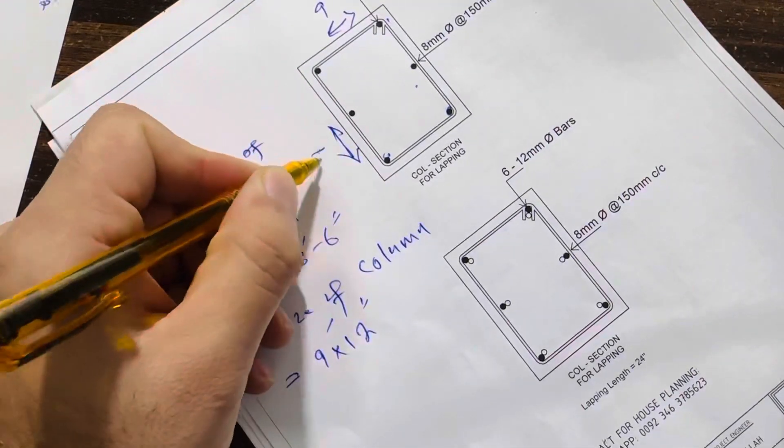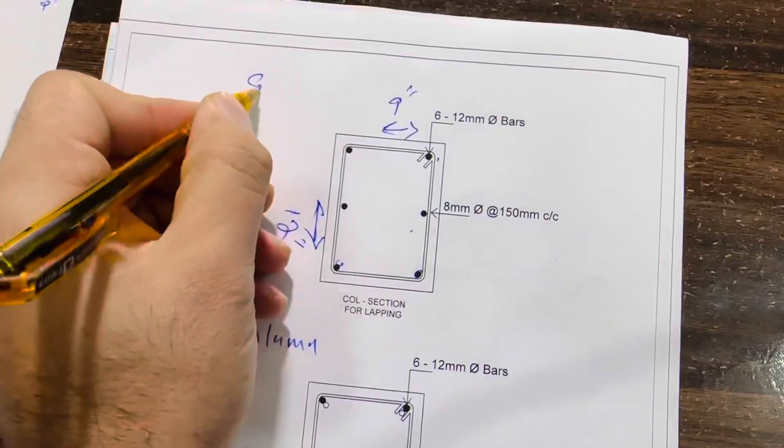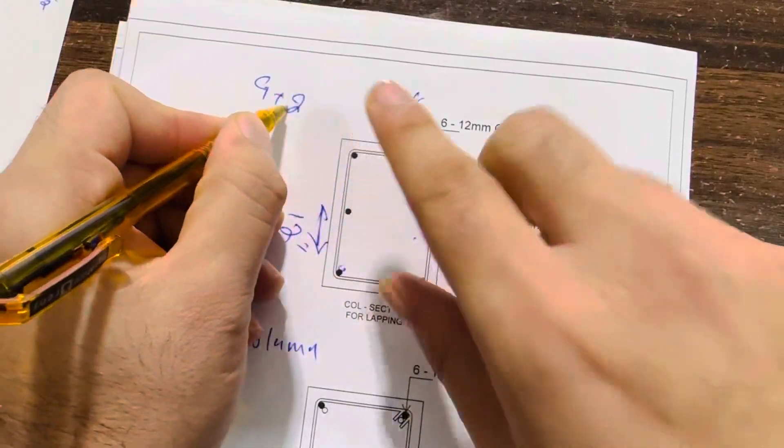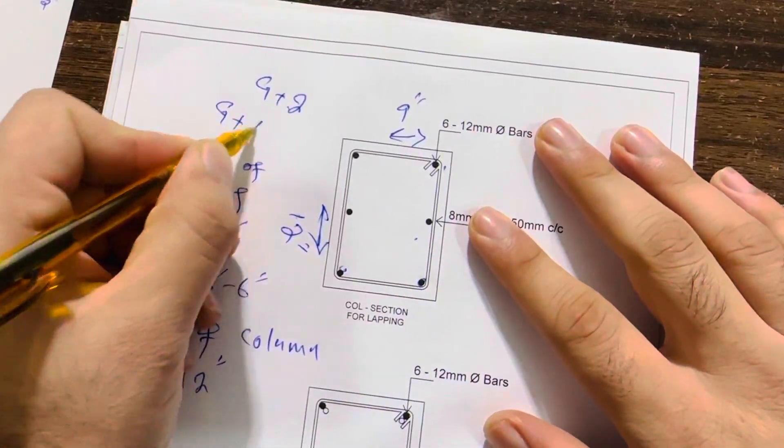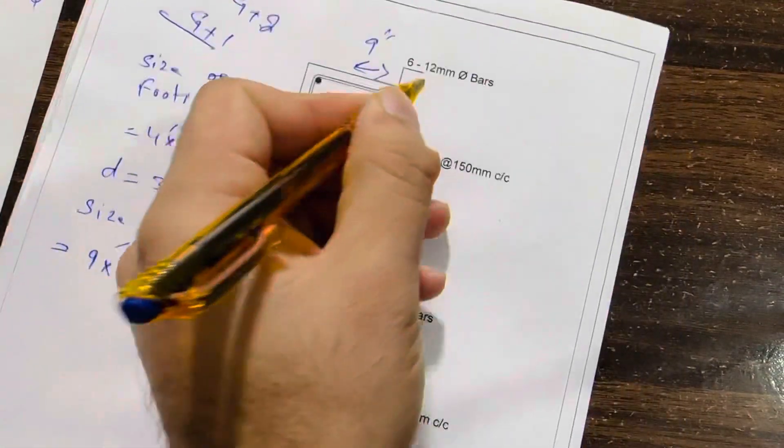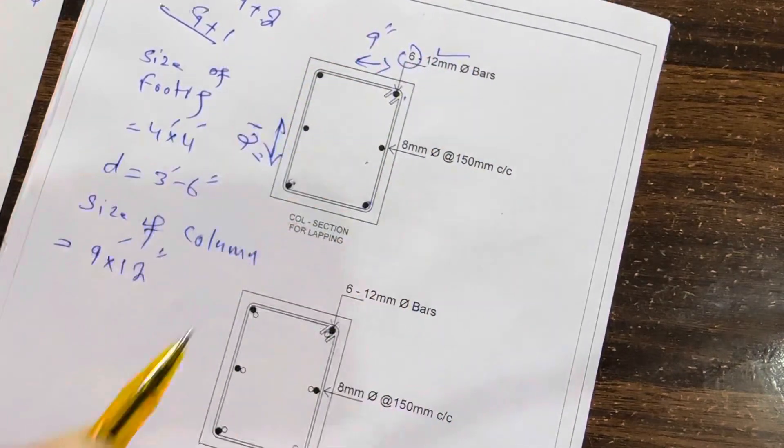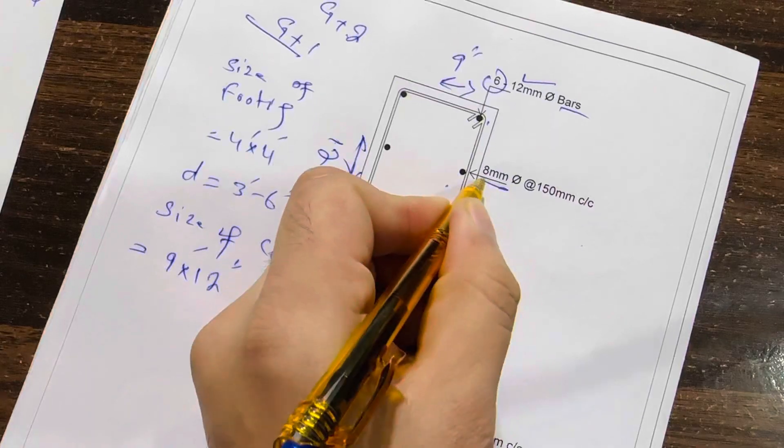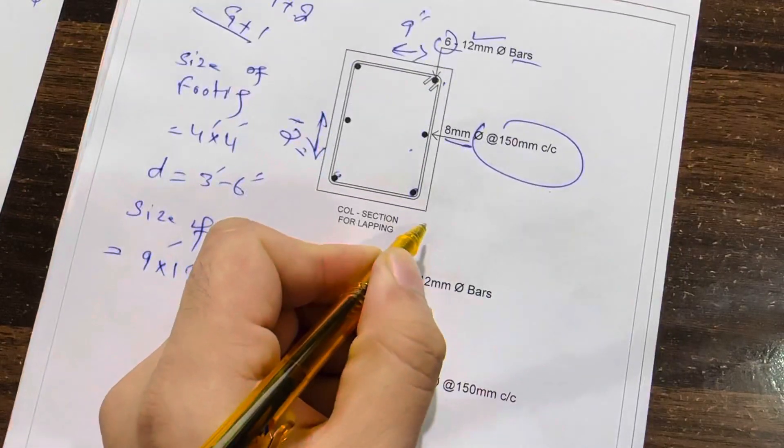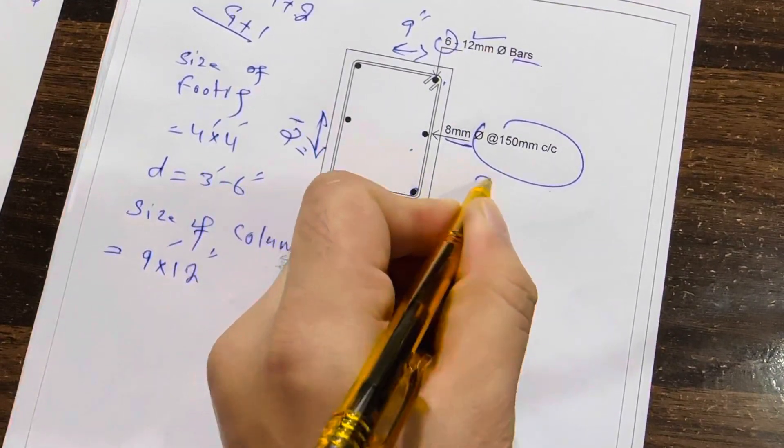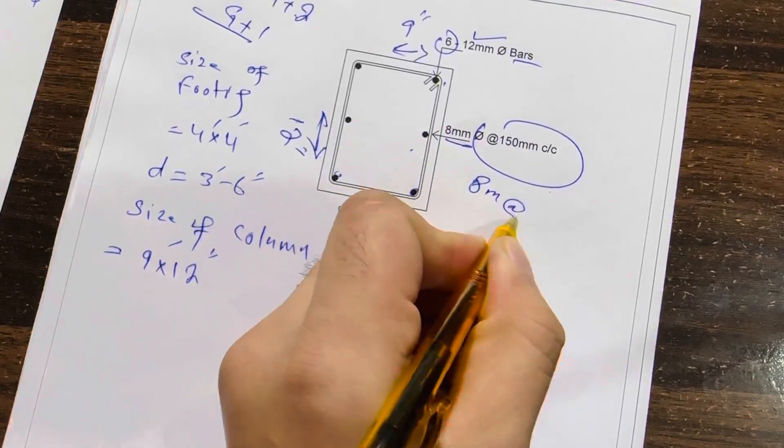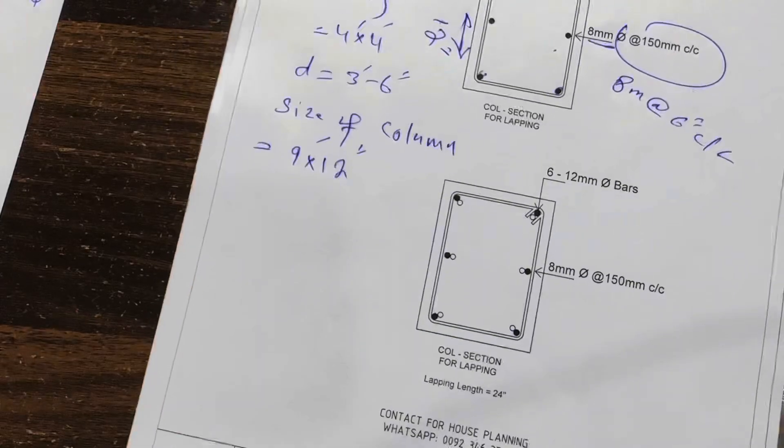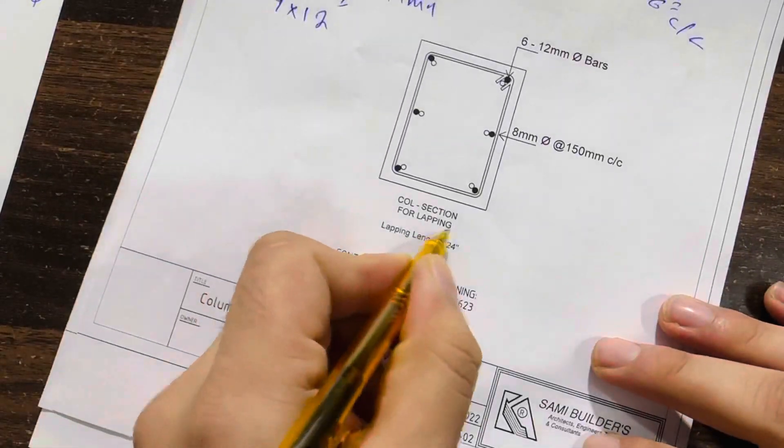This is especially for G plus two, but I did it for G plus one. For double story, you can see we have 6 numbers of steel rods, dia 12 millimeter bar. The stirrup dia is 8 millimeter with spacing of 150 millimeter center to center, or you can say 8 millimeter with spacing of 6 inches center to center.